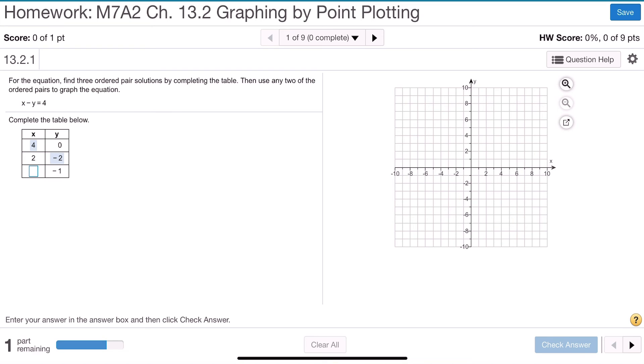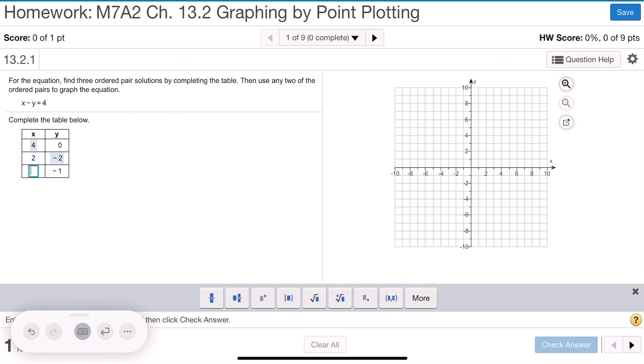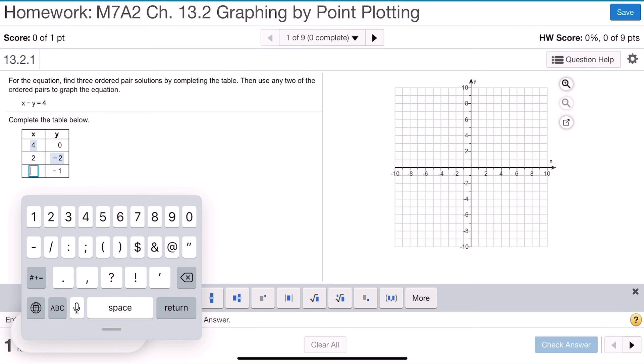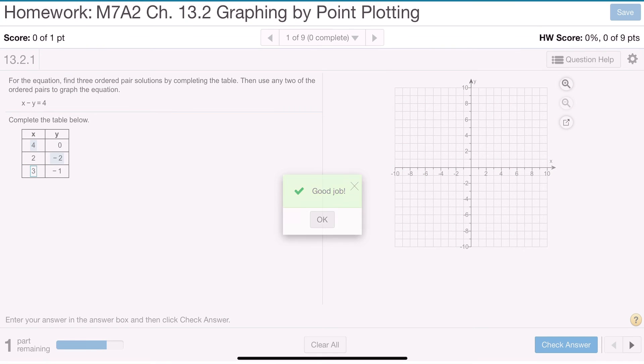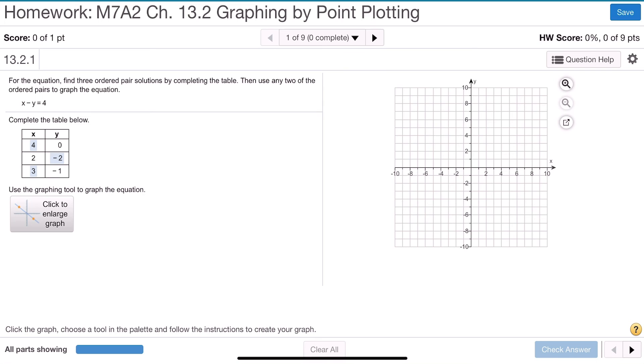The third point that they want you to solve for is a y of negative 1. If we plug in a y of negative 1, we have x minus negative 1 is 4. So, subtracting a negative you know is the same as adding, so we have x plus 1 is 4. Well, x plus 1 is 4, x must be 3. Again, we check that, and we find out that all three of our points are correct.